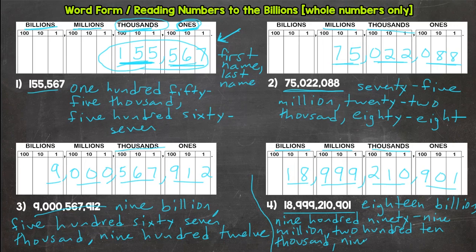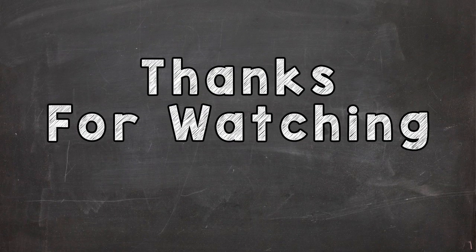Thousand, nine hundred one — and there we go. That's word form and reading numbers up to the billions. If you think you're ready for the practice, go ahead and jump to that video in the description. Or if you want a little more practice or want to work through a few more with me, go on to part two and then try your practice.